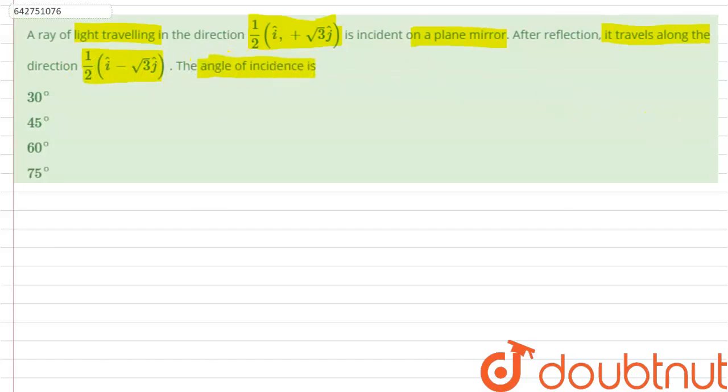incidence is - so the question is asking us to find out the angle of incidence if the given vectors are the direction of ray of light at incidence and after reflection.